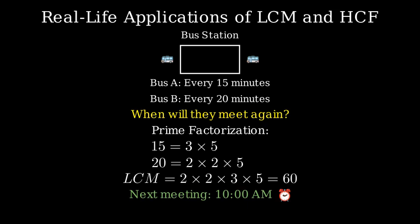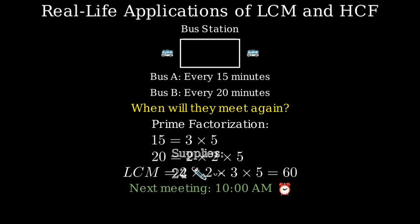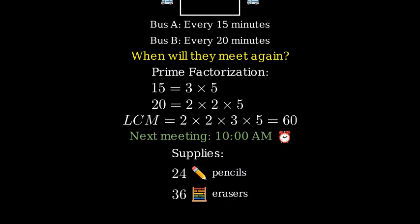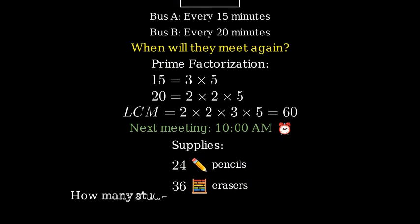Now, let's look at how HCF helps in resource distribution. A teacher has 24 pencils and 36 erasers to distribute equally among some students. What's the maximum number of students that can receive an equal number of both items with no leftovers?